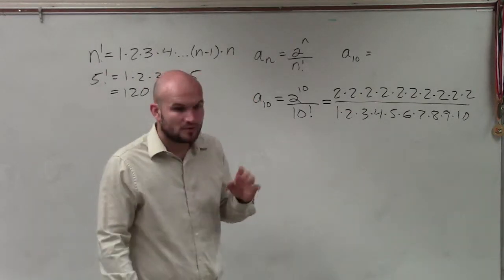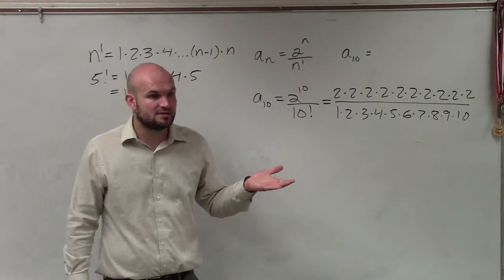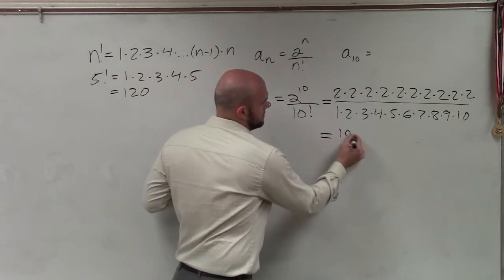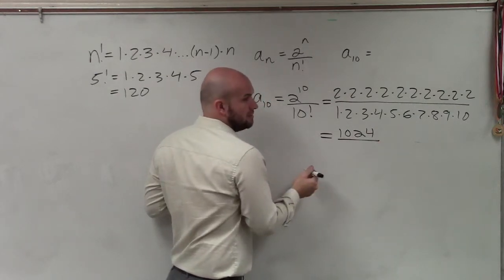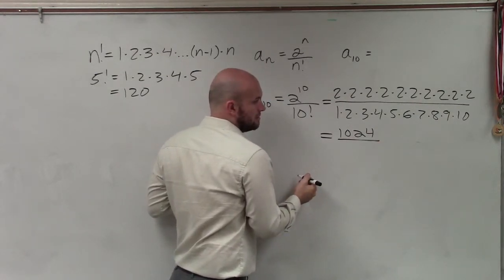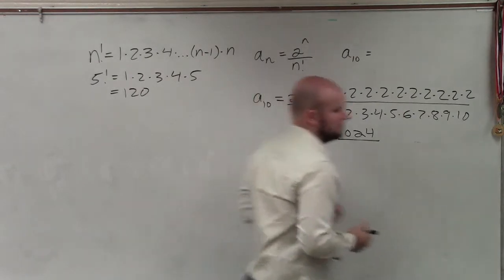So 2 to the 10th power is 1,024, and 10 factorial is 3,628,800.